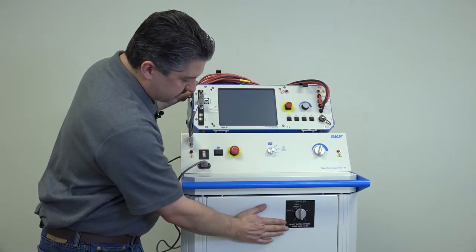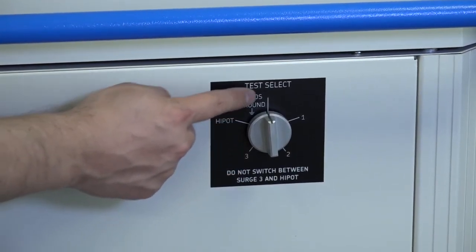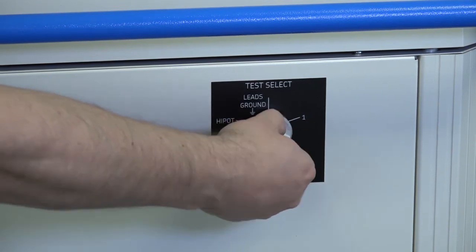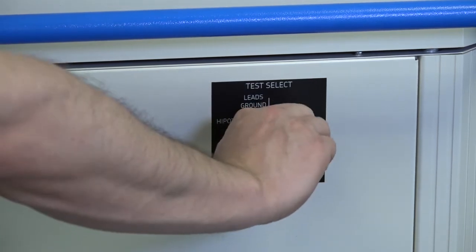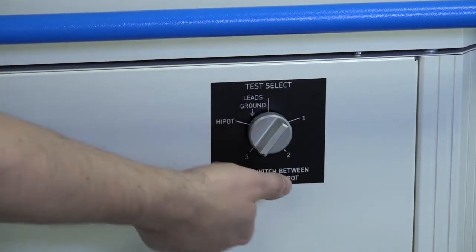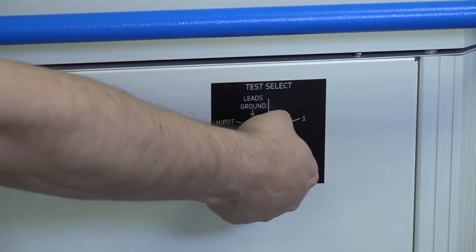On the faceplate of the unit, below the handle, we have the test selector switch. It has five positions: a high-pot for DC high-pot testing, a leads-grounded position, and positions one, two, and three that are used during surge test to put the surge down the appropriate lead.